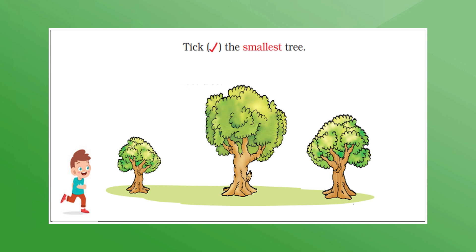While in the park, Rohan saw three beautiful trees. He started thinking: which of the three is the smallest of all? Let us see which of the three is the smallest. The one which is nearest to Rohan is the smallest of all trees.